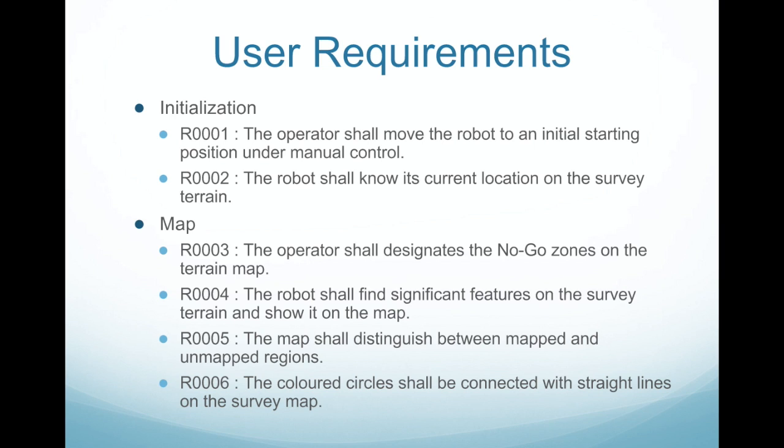Now I'd like to talk about user requirements. Based on the minutes of the last meeting, we have derived two requirements within the initiation stage: the first is that the operator may move the robot to its initial starting position, and the second is that the robot has to be aware of its location at all times. With regards to map requirements, the operator has to be able to determine no-go zones, the robot should be able to find features of the mock-up map, distinguish areas that are already explored, and connect coloured circles within a straight line.